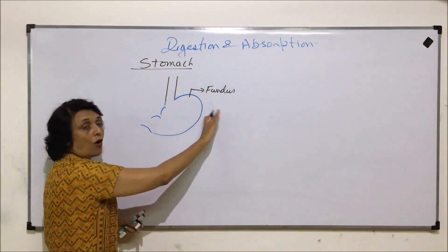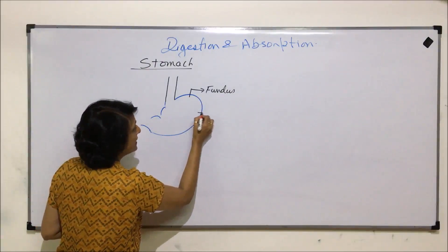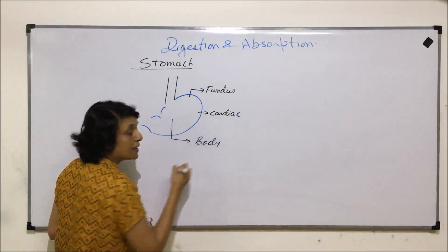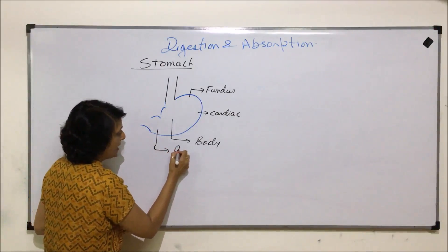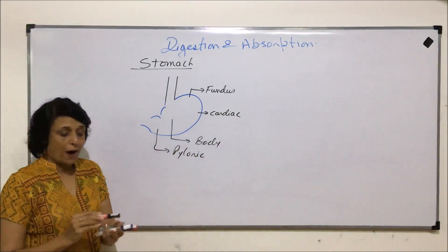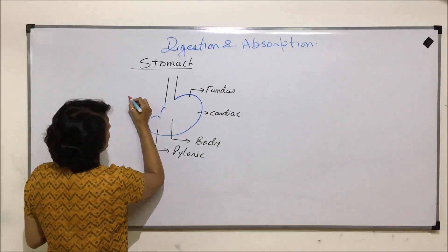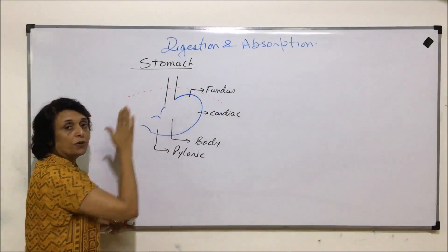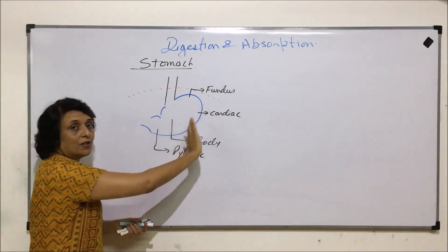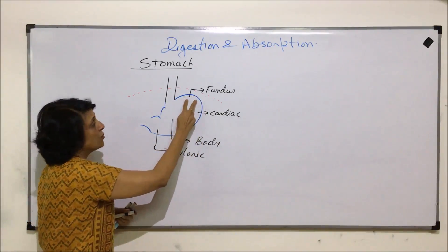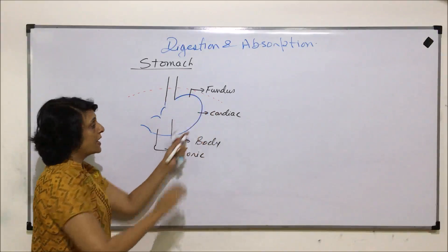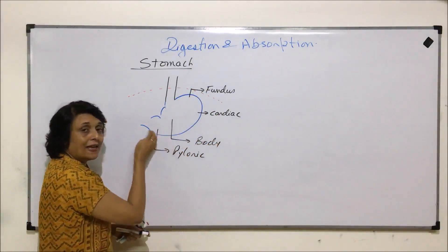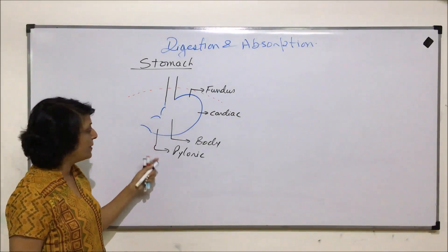This part which is more on the left-hand side is called the cardiac part. The main part is known as the body of the stomach, and the lower part is known as the pyloric. The pyloric part is going to lead into the small intestine.